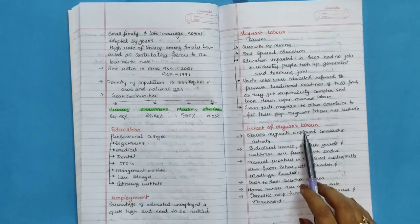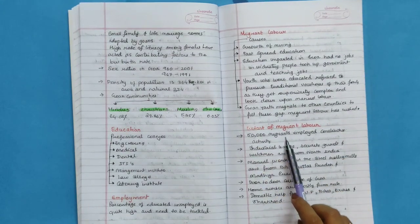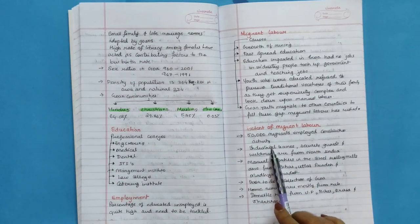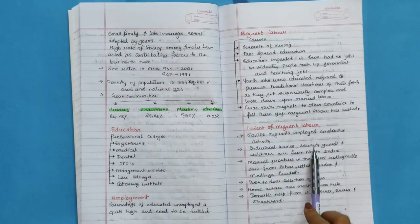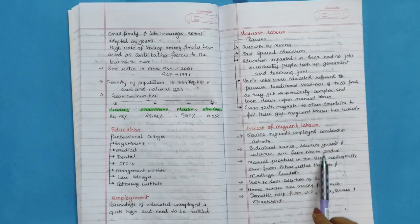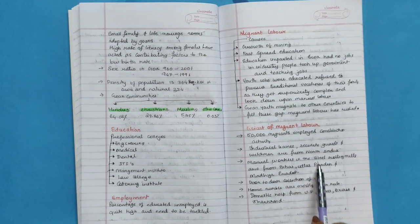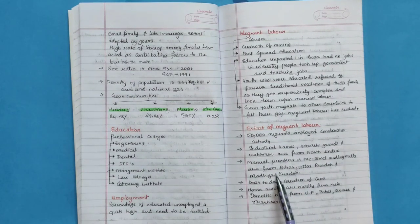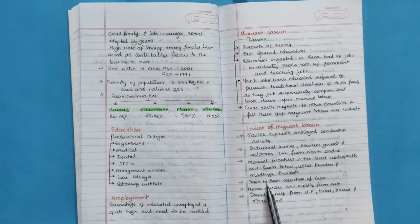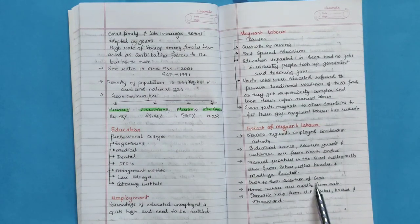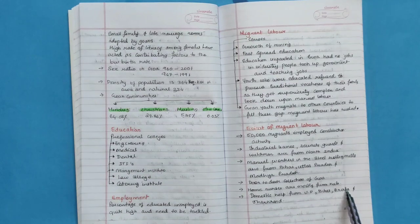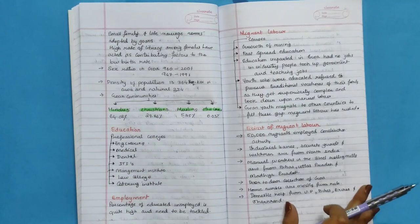Extent of migrant laborer: 50,000 migrant employee in construction activity, industrial units, security guard, watchmen are from North India. Manual workers in steel rolling mills are from Bihar, Uttar Pradesh and Madhya Pradesh. Door-to-door collectors, home nurses are mostly from Kerala, domestic help from UP, Bihar, Orissa and Jharkhand.